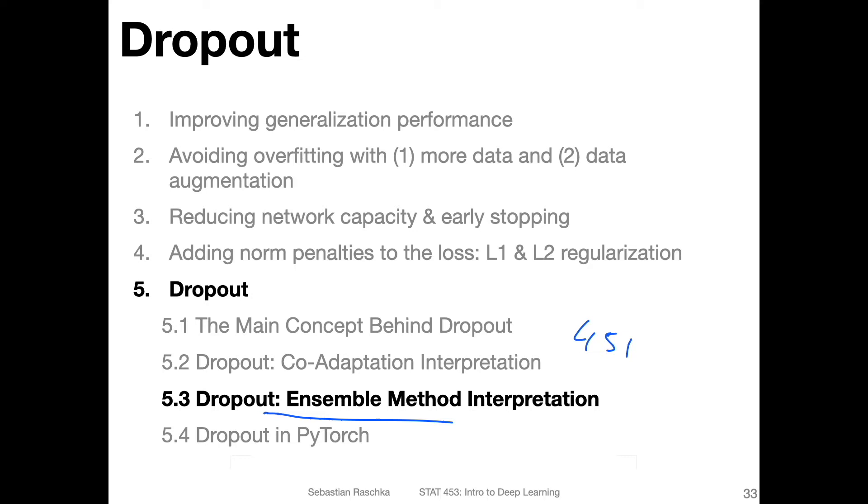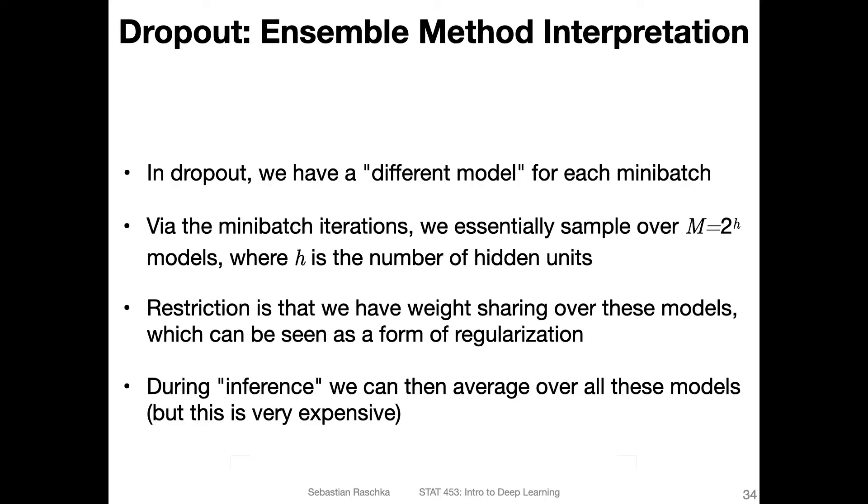In any case, talking about the ensemble approach, why dropout can be seen as an ensemble method? You can think of your dropout procedure as having a different model for each mini-batch. Because you randomly drop nodes, each forward pass, each mini-batch will see a slightly different model.